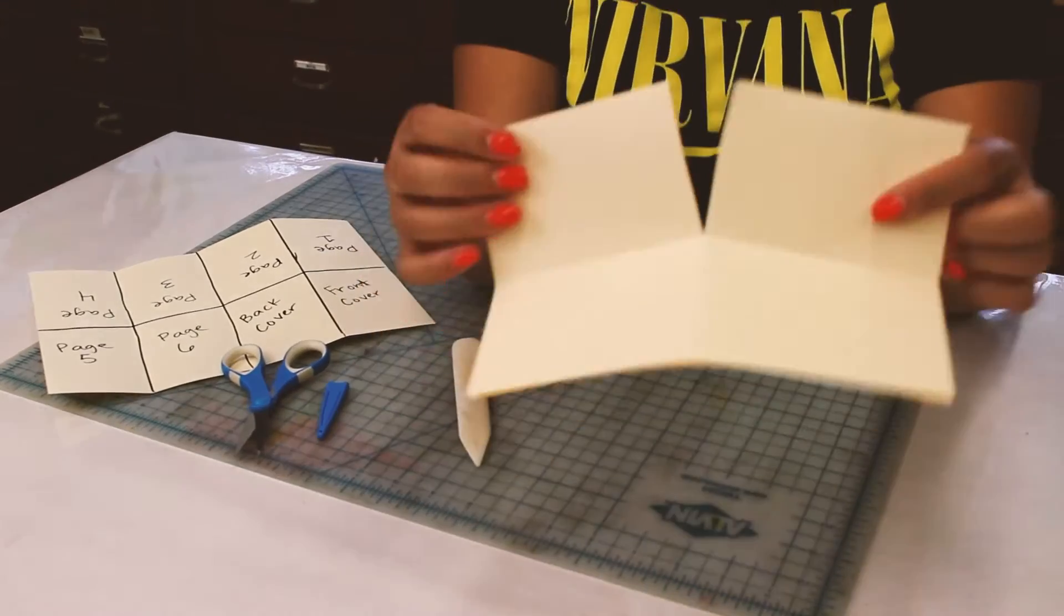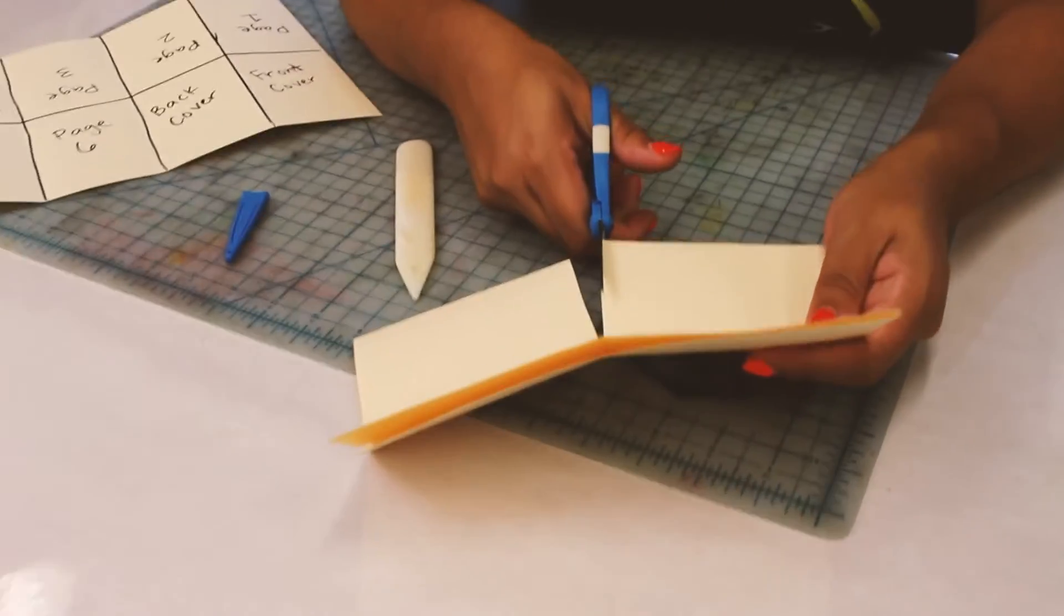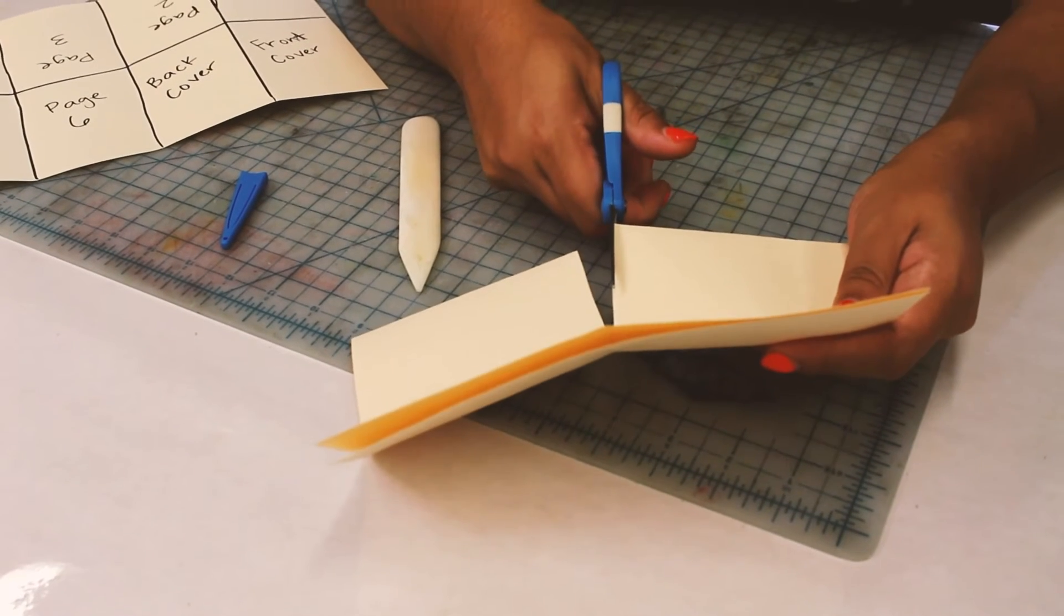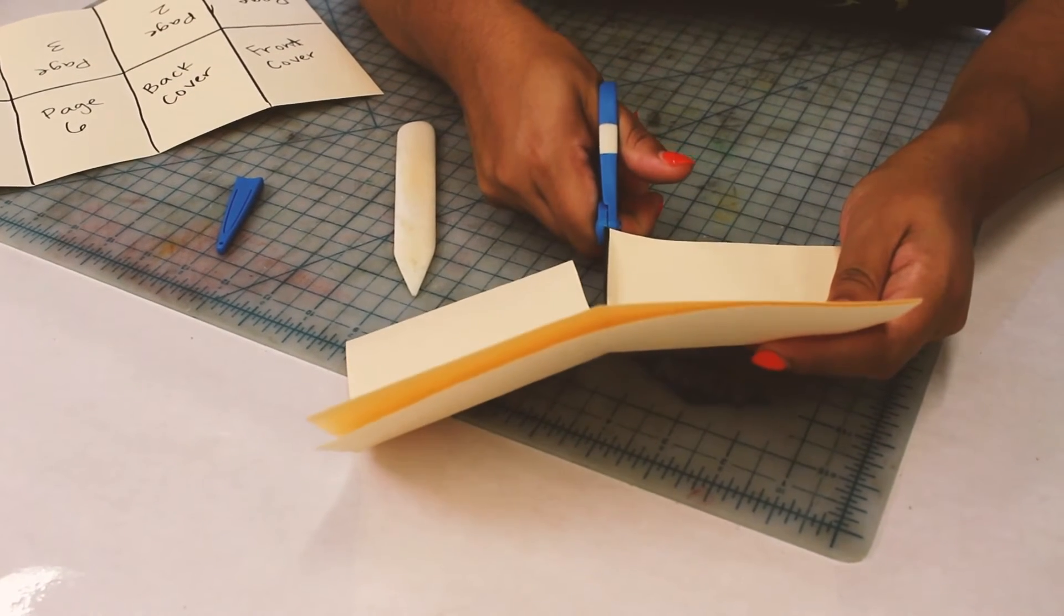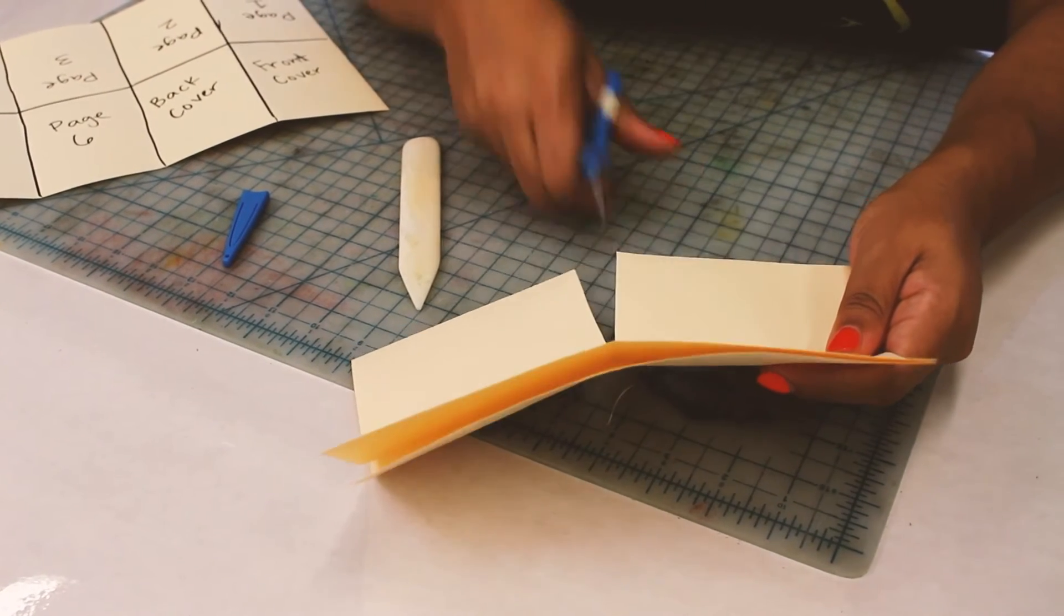And when we're done it should look like this. Okay so mine is a little tiny bit crooked here so I'm gonna cut off just this excess paper just so again that when I fold it it's not hanging over.